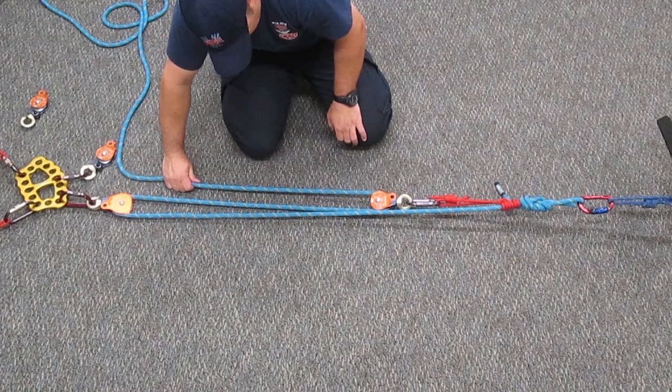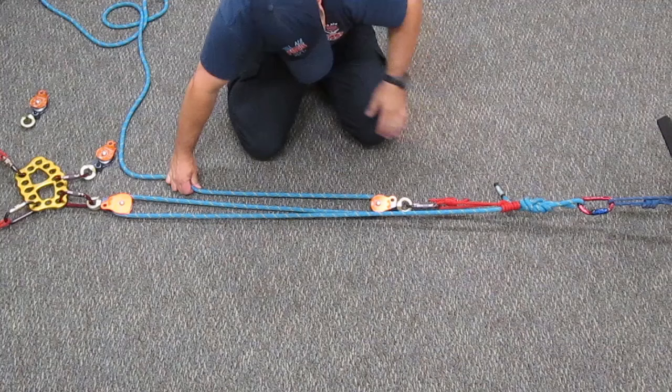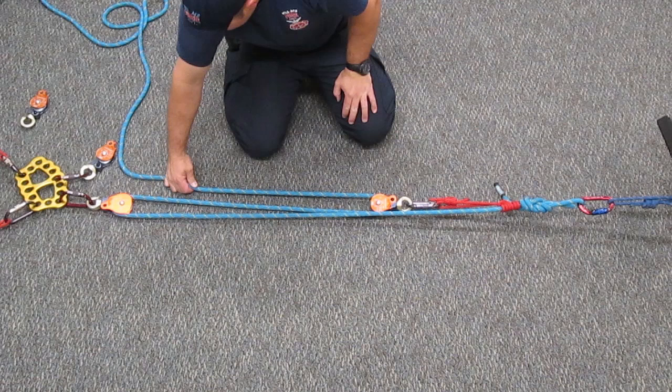We can also tell it's a 3-to-1 because if we pull on a haul, if we can pull three feet of rope and it moves the load one foot, we also know it's a 3-to-1 mechanical advantage.